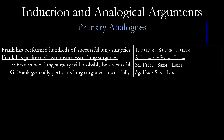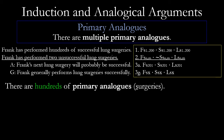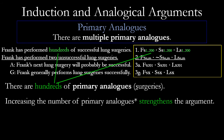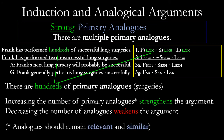Another criterion: the number of primary analogs. We want to see that our sample size is large. In this argument, there are hundreds of primary analogs because we've referred to hundreds of successful lung surgeries that Frank has performed. This makes the argument quite strong. Increasing the number of primary analogs strengthens an argument; decreasing it weakens it. Of course, the analogs should remain relevant and similar in the ways we've described.